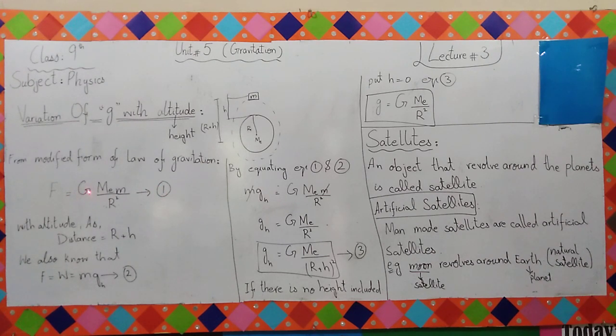G is your constant, universal constant of gravity. M, E is Earth, the mass of Earth. Small M is the mass of the object. And r square, R is the distance.